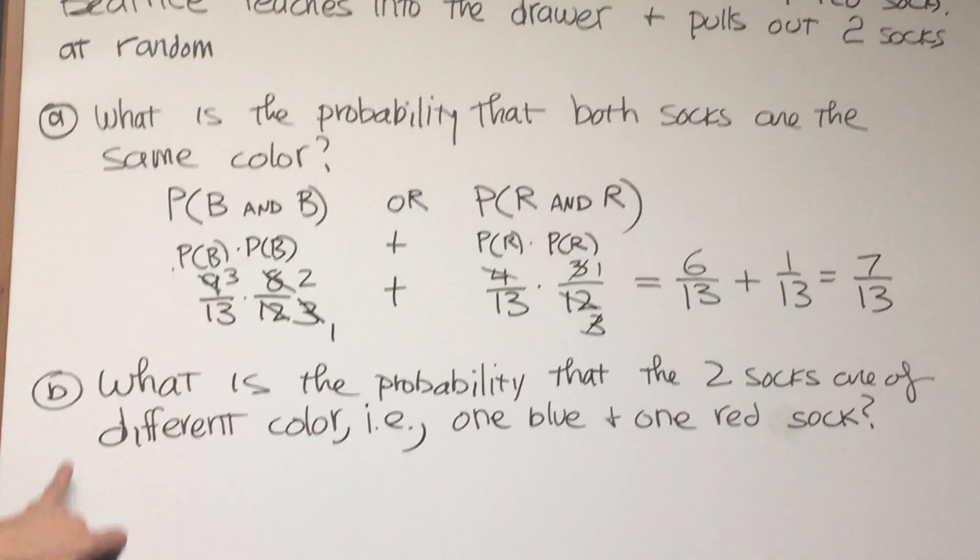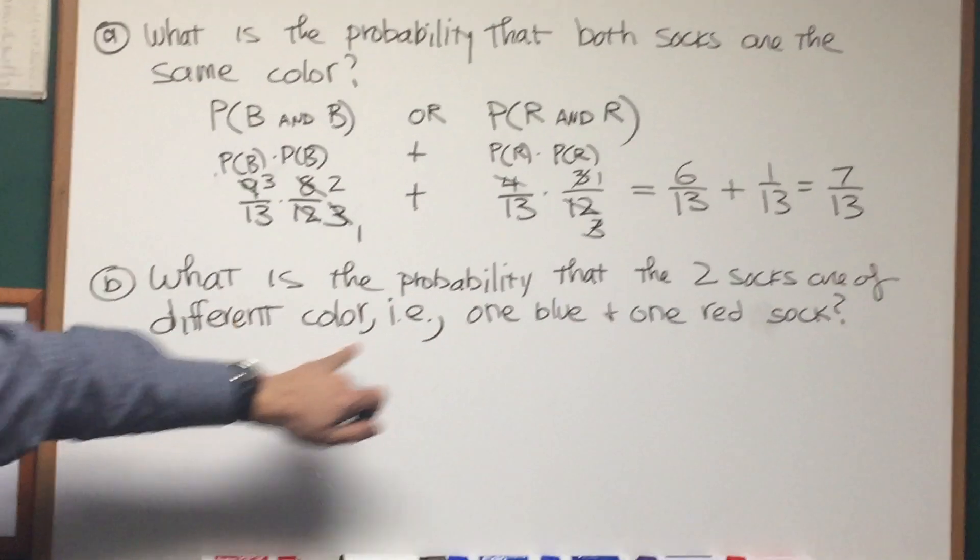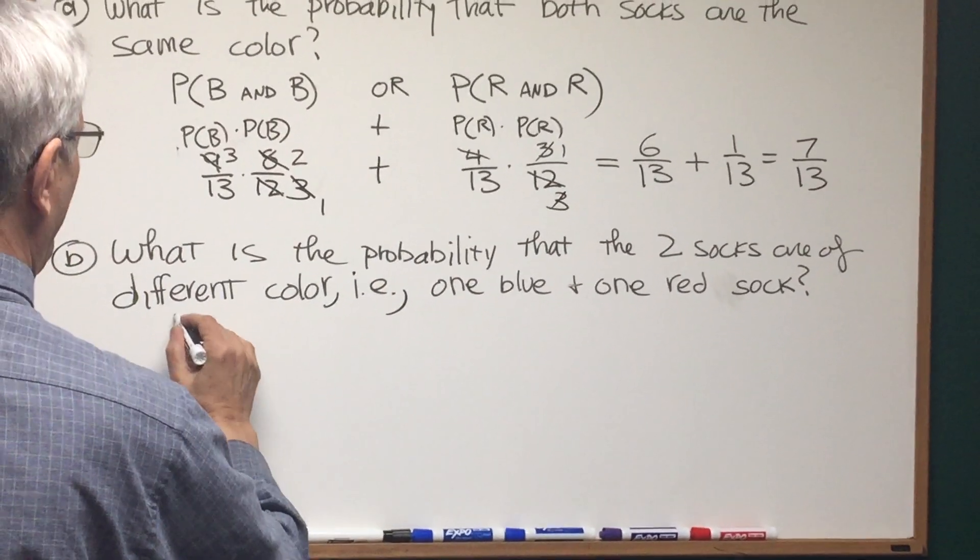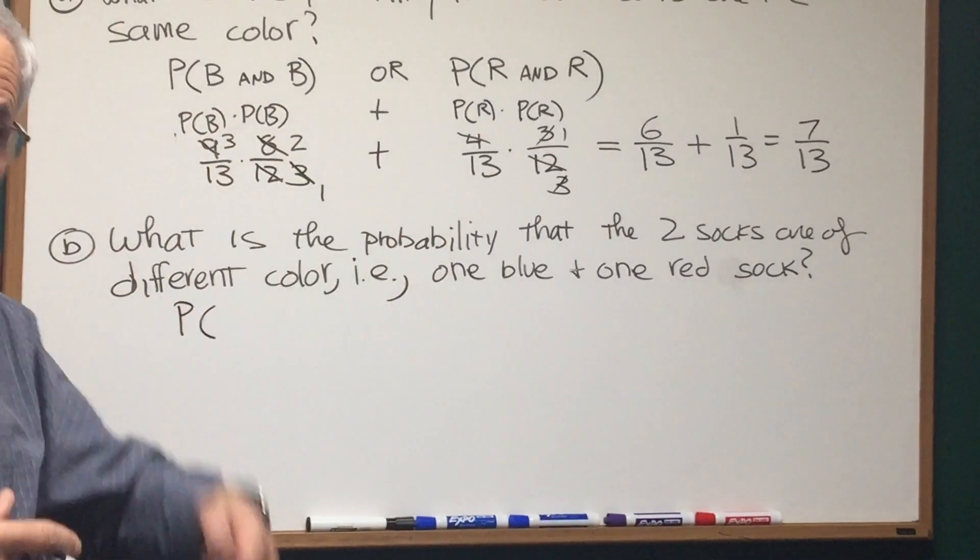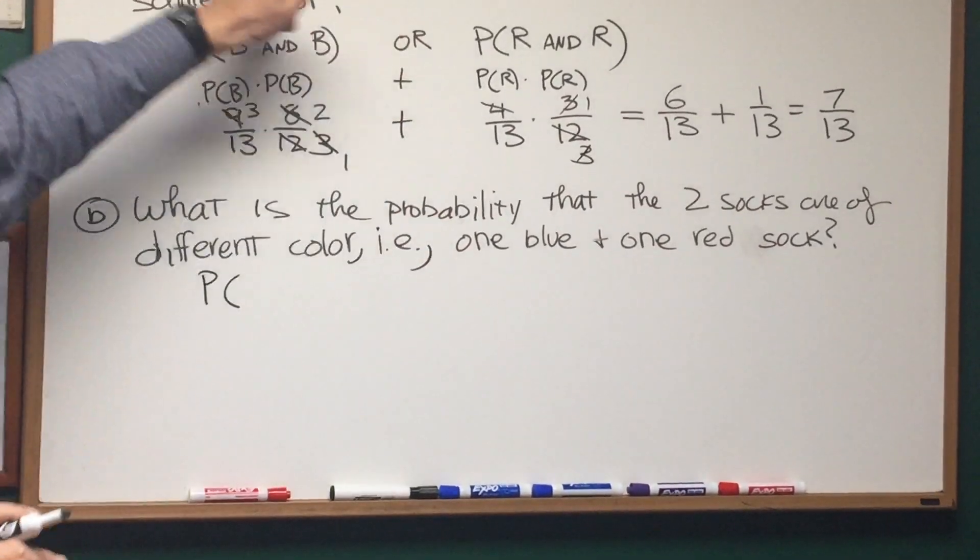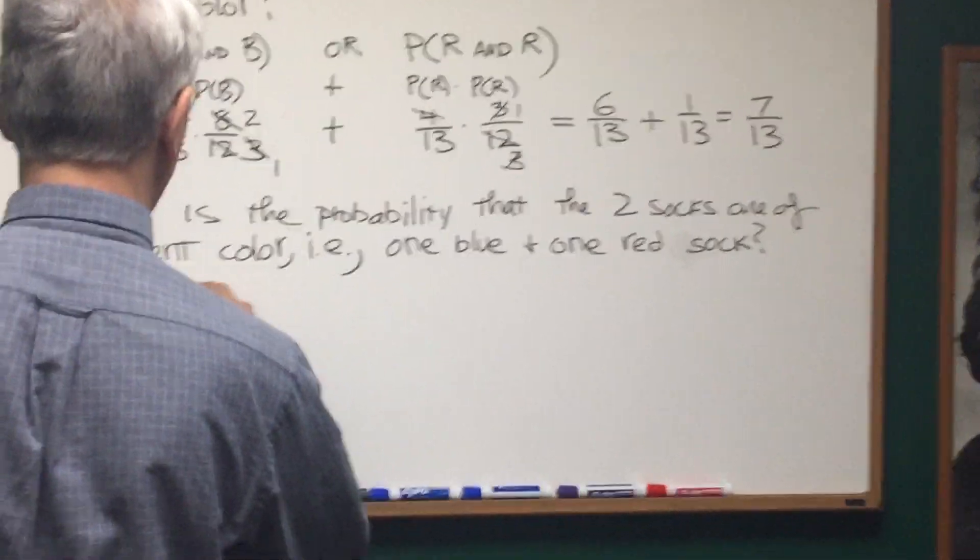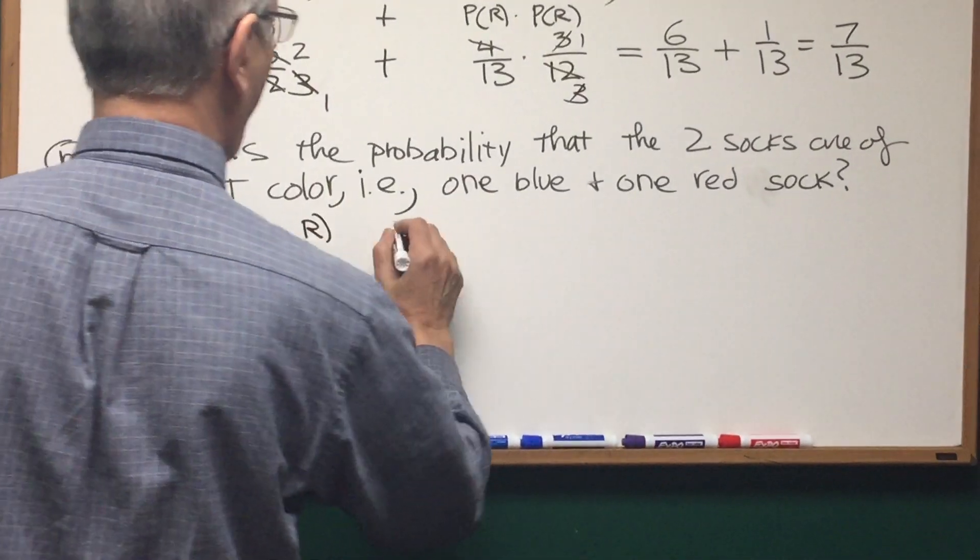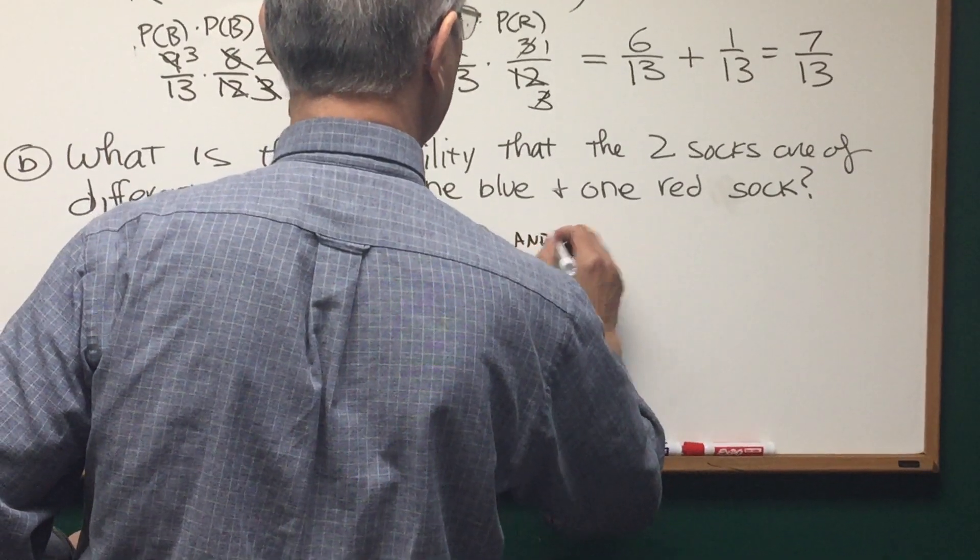Now let's go to Part B. What is the probability that the 2 socks that Beatrice chooses are of different color? That is, 1 blue and 1 red. Alright, well let's write the formula for that. We want, we have to consider both outcomes, red first, blue second, or blue first, red second. Remember, that's how we're modeling, when we take 2 socks out simultaneously, one at a time. Probability of blue and red, or probability of red and blue.